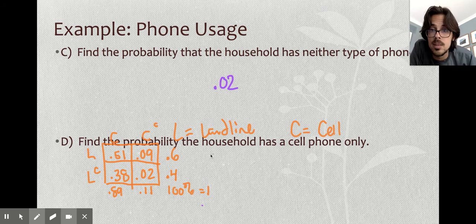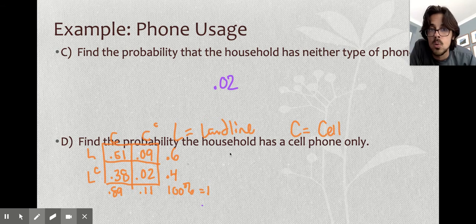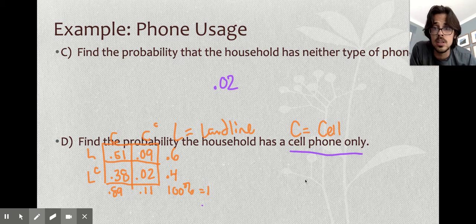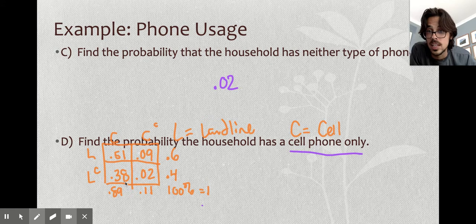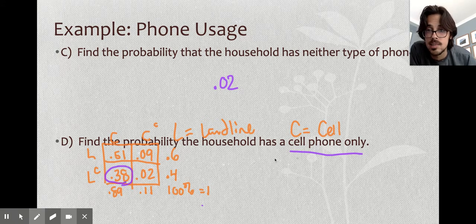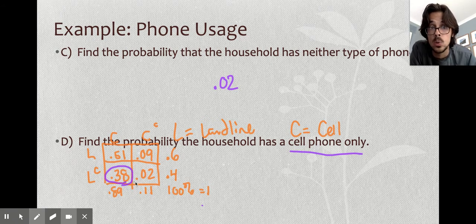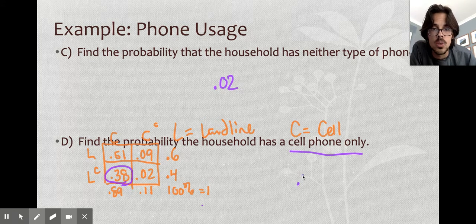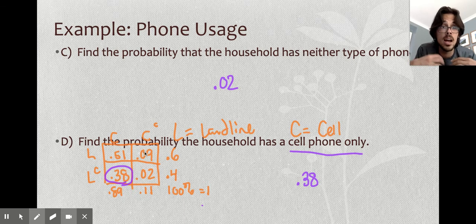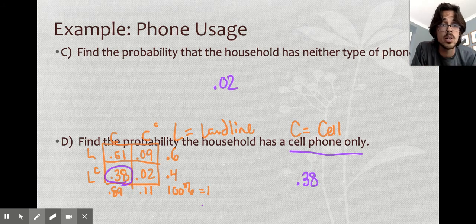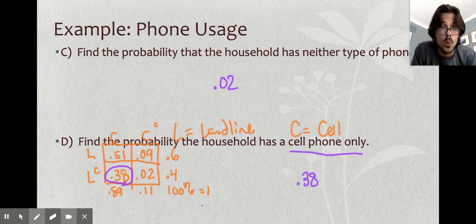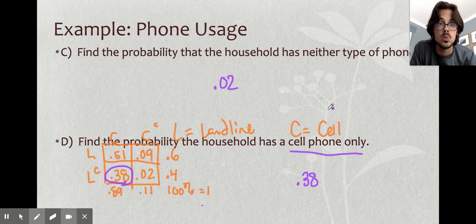And then finally, find the probability that this house is a cell phone only. When it says cell phone only, there's like that implication there that they have a cell phone and they also don't have a landline. So that is actually just going to be this box, cell phone and no landline, which is just 38%. So when you're dealing with more complicated probability, where it's not just a very simple quick answer, a two-way table is a great technique for organizing probability and making it pretty easy to compute.